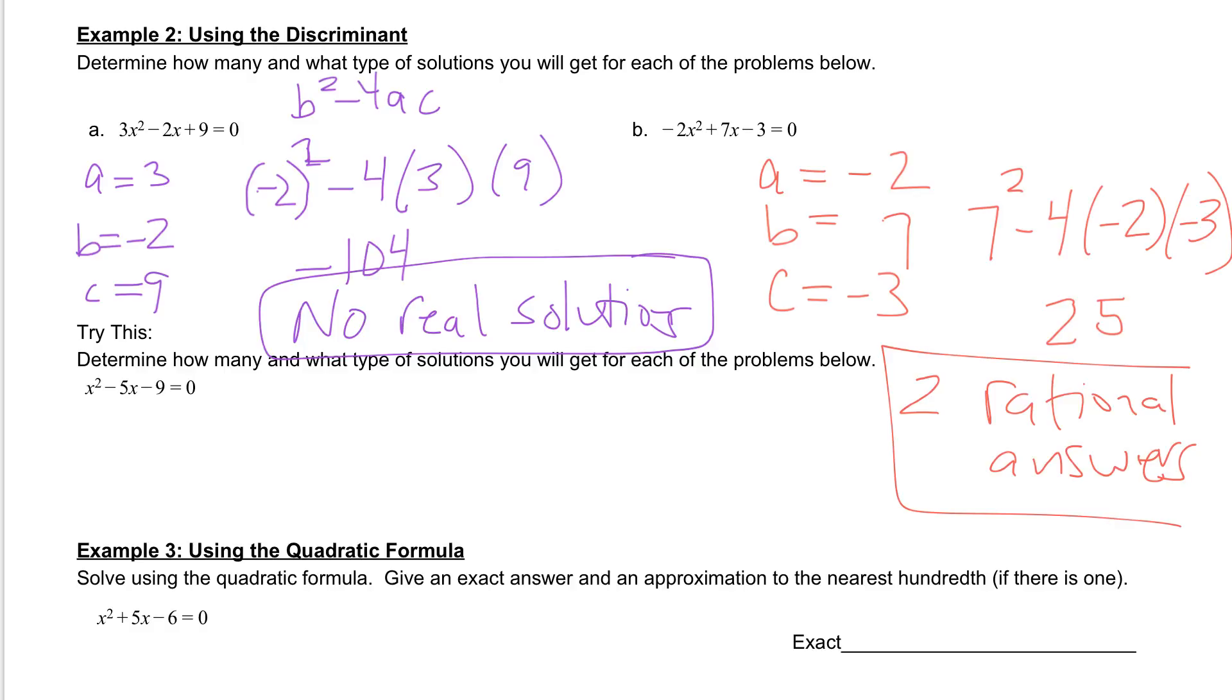Next I'd like you to do the try this. So go ahead and pause it now. Unpause it when you're ready to check your answer. If you did the try this correctly you should have gotten a discriminant of 61, which tells you you will have 2 irrational solutions.